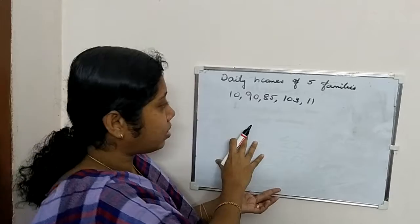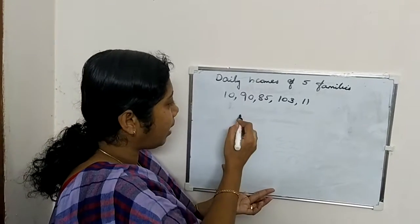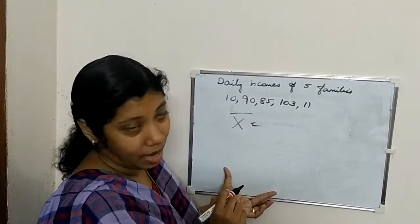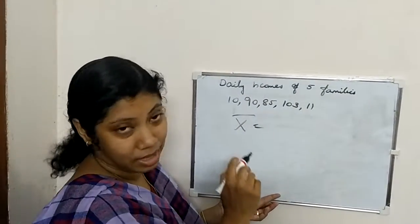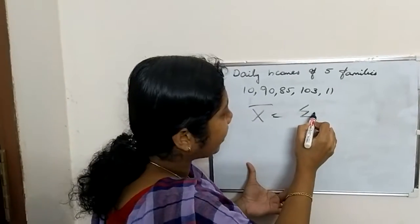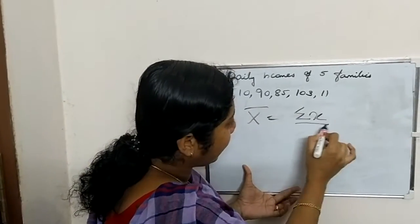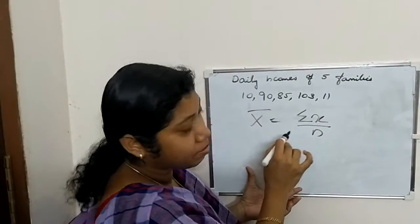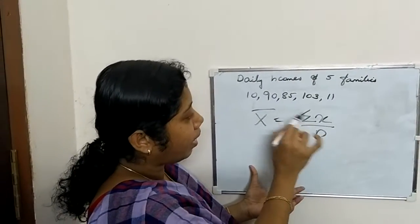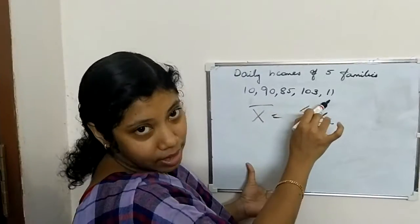Now the average income equation: x bar, where x bar means arithmetic mean. Arithmetic mean is equal to sigma x divided by n. Sigma means sum, so first we find out the sum of these items.